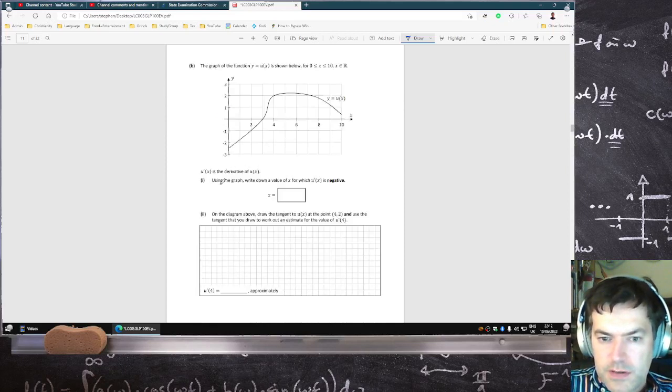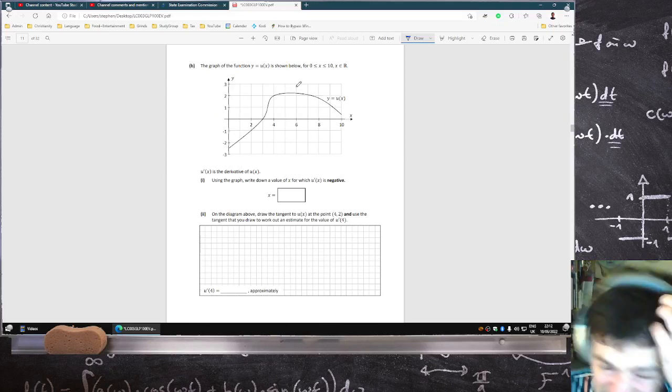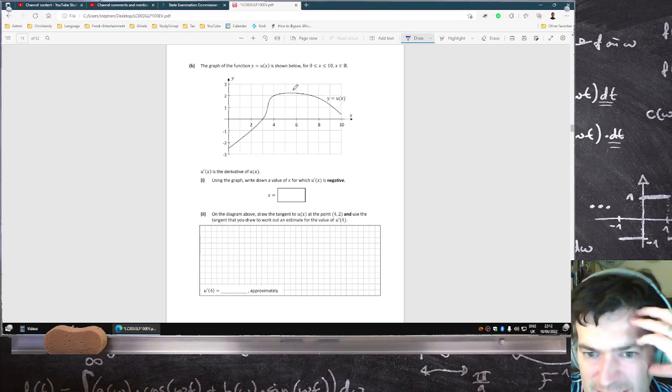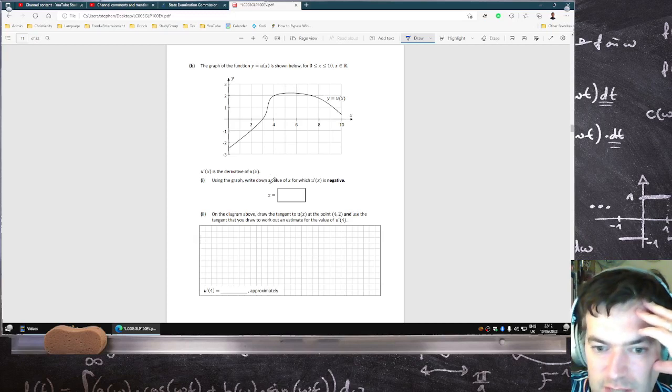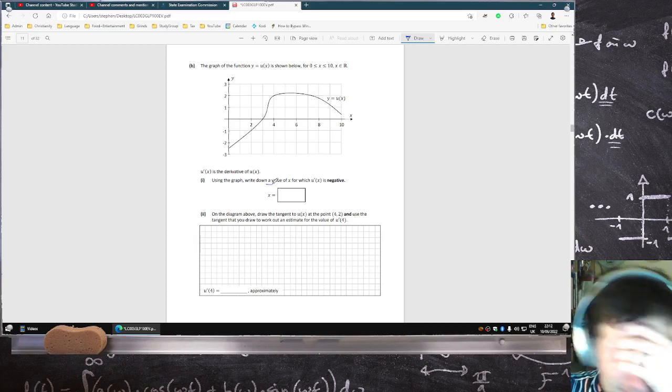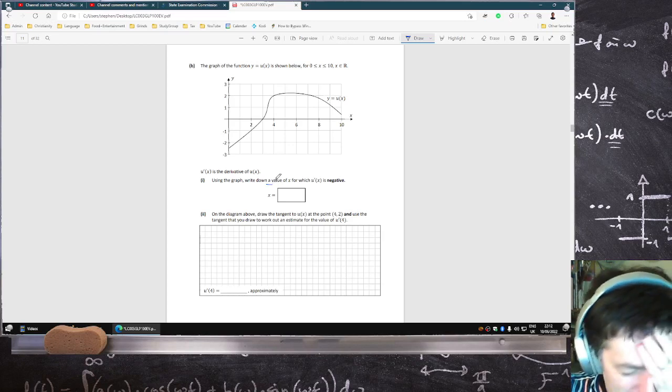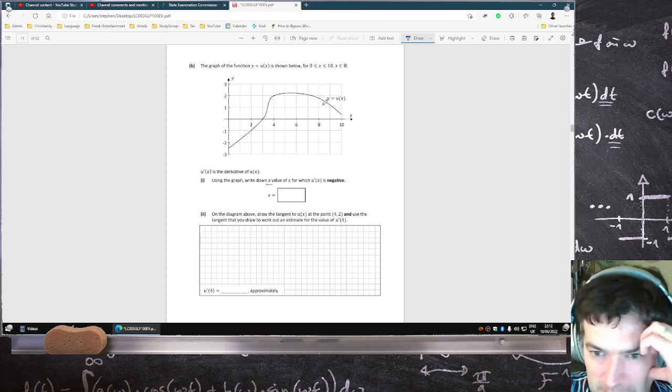u' is the derivative. Using the graph, write down the value of x for which u', the slope, is negative. Hard to tell. Oh, it just says write down a value of x. Thank whoever wrote this. I don't have to try. So I just have to pick any value over on the right here, like for example, 8.